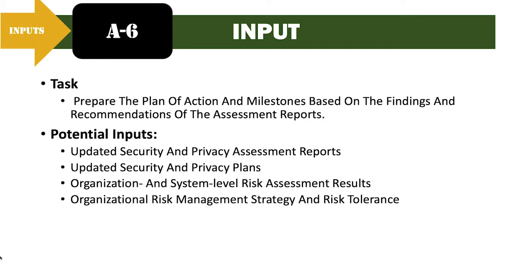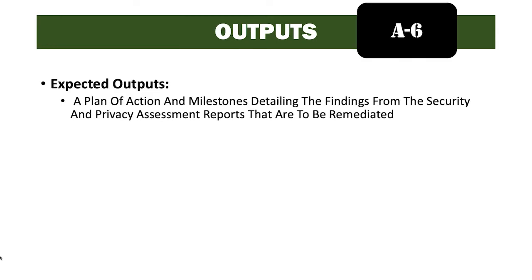Potential inputs for this task include the updated security and privacy assessment reports, the updated security and privacy plans, the organization and system-level risk assessment results, the organizational risk management strategy, and risk tolerance. Expected outputs from this task are the Plan of Action and Milestones detailing the findings from the security and privacy assessment reports that are to be remediated.